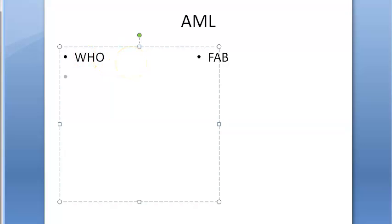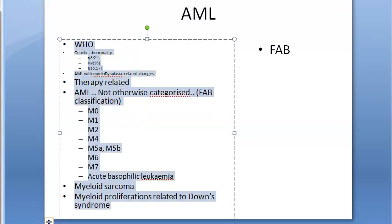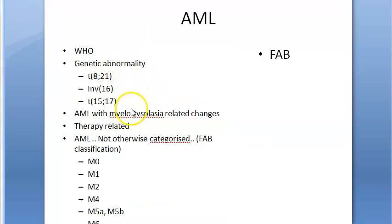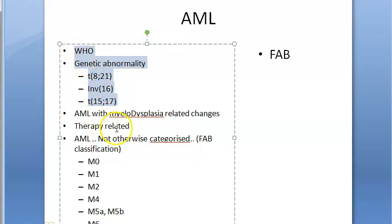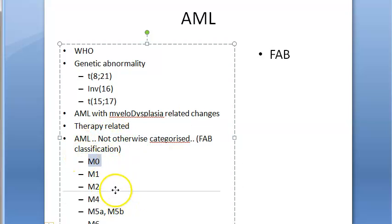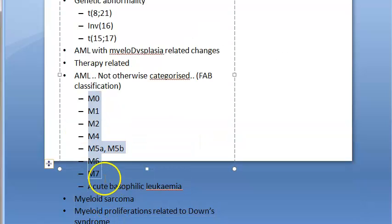According to the WHO classification, there are several types of AML: AML with genetic abnormality — which includes translocations like t(8;21), inv(16), and t(15;17); AML with myeloid dysplasia-related changes; therapy-related AML; and AML not otherwise classified, which is essentially the FAB classification.